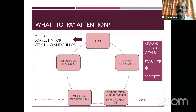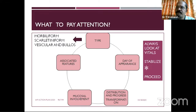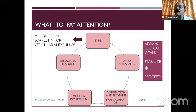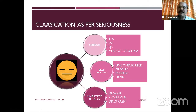There may be some variation in the day of rash appearance, especially with the use of antibiotics, but it can roughly help diagnose. A key concern is whether the child is stable or unstable — dengue may sometimes be stable, sometimes very unstable. According to severity, certain serious conditions like toxic shock syndrome, staphylococcal scalded skin syndrome, Stevens-Johnson syndrome, and meningococcemia require immediate attention without wasting any time.